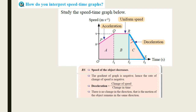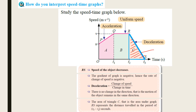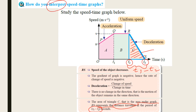The area under the graph for RS forms a triangle. So the area of that triangle represents the distance traveled. The area under the graph represents the distance traveled in the period of t2 to t3, which is t3 minus t2 seconds. That's it for how to interpret the speed-time graph. I hope you understand.